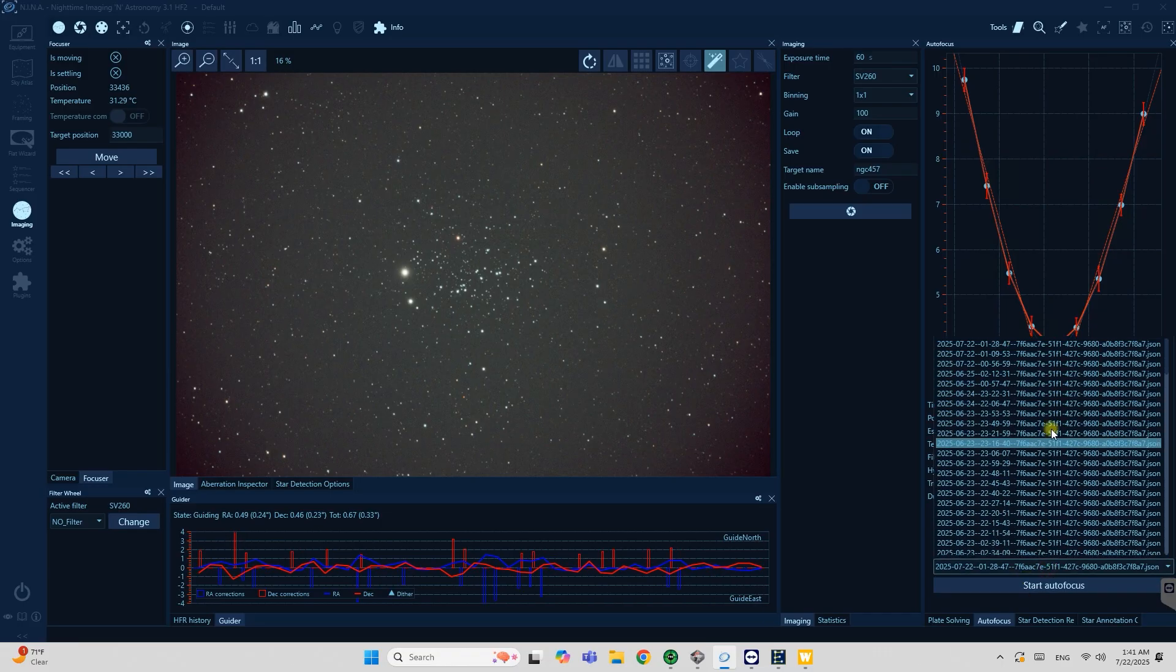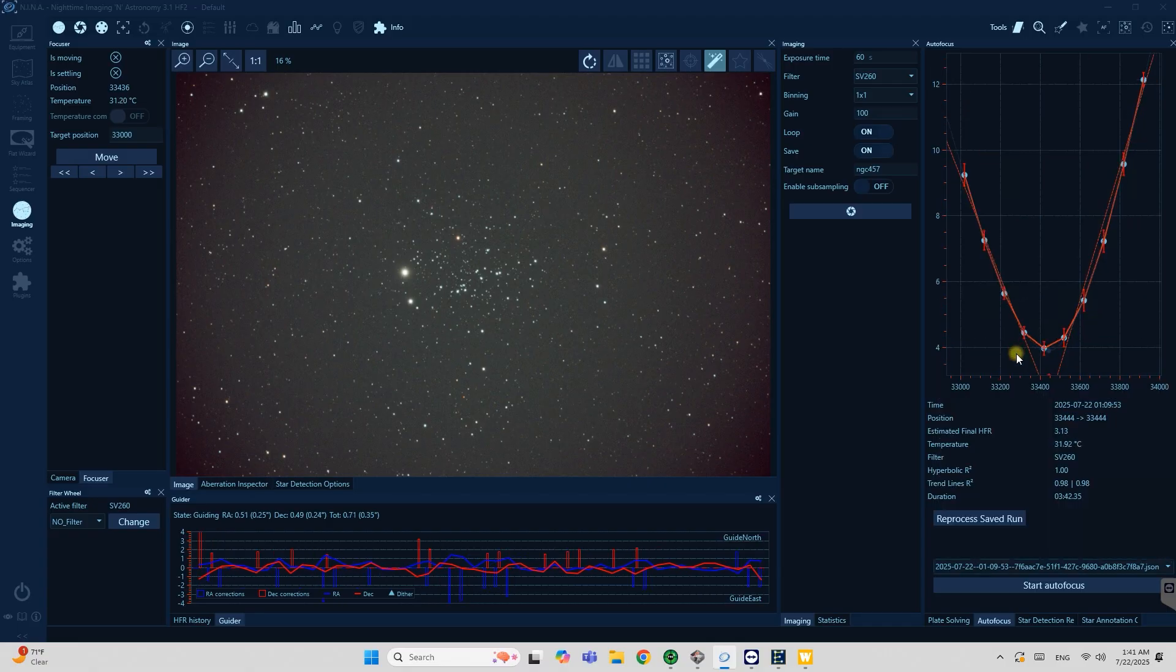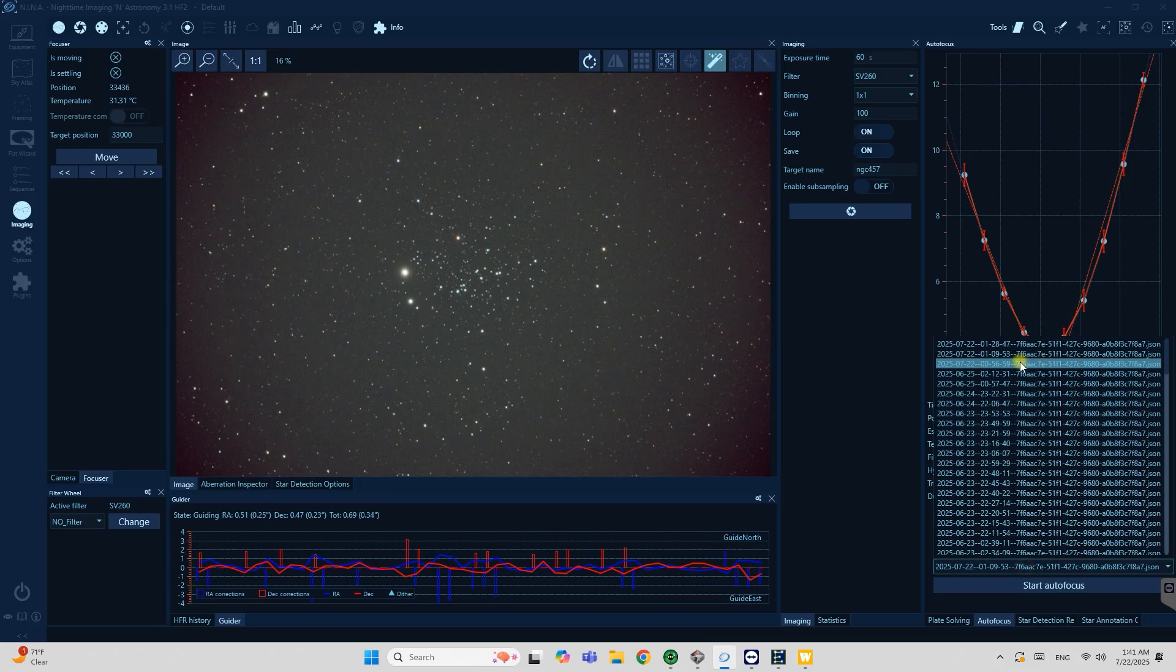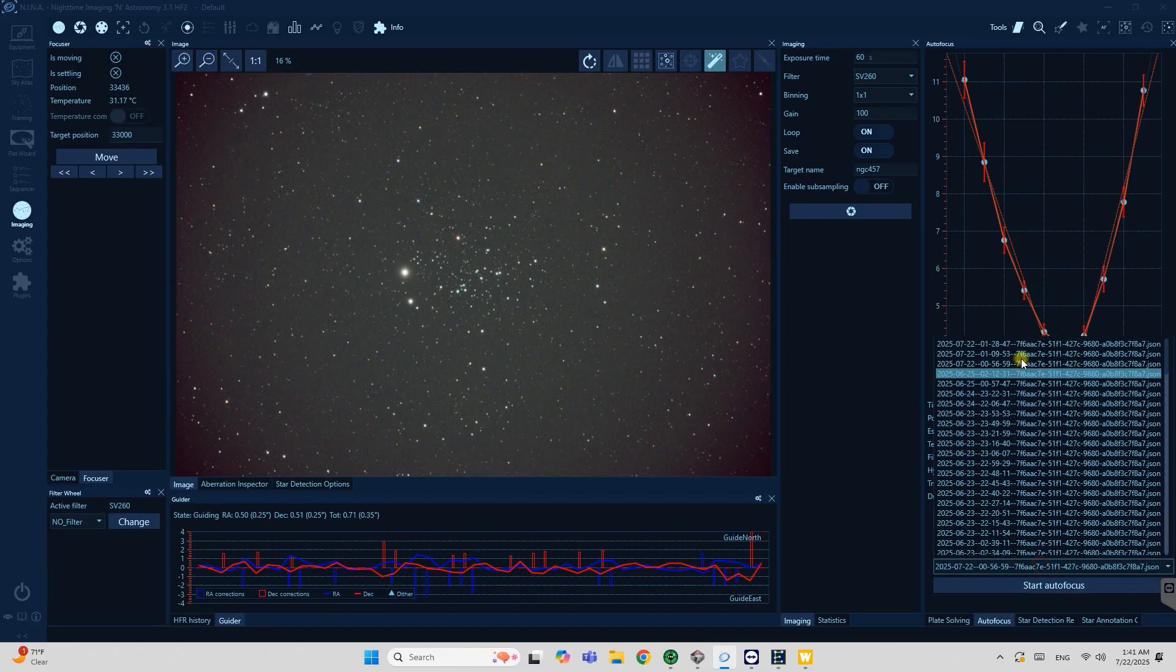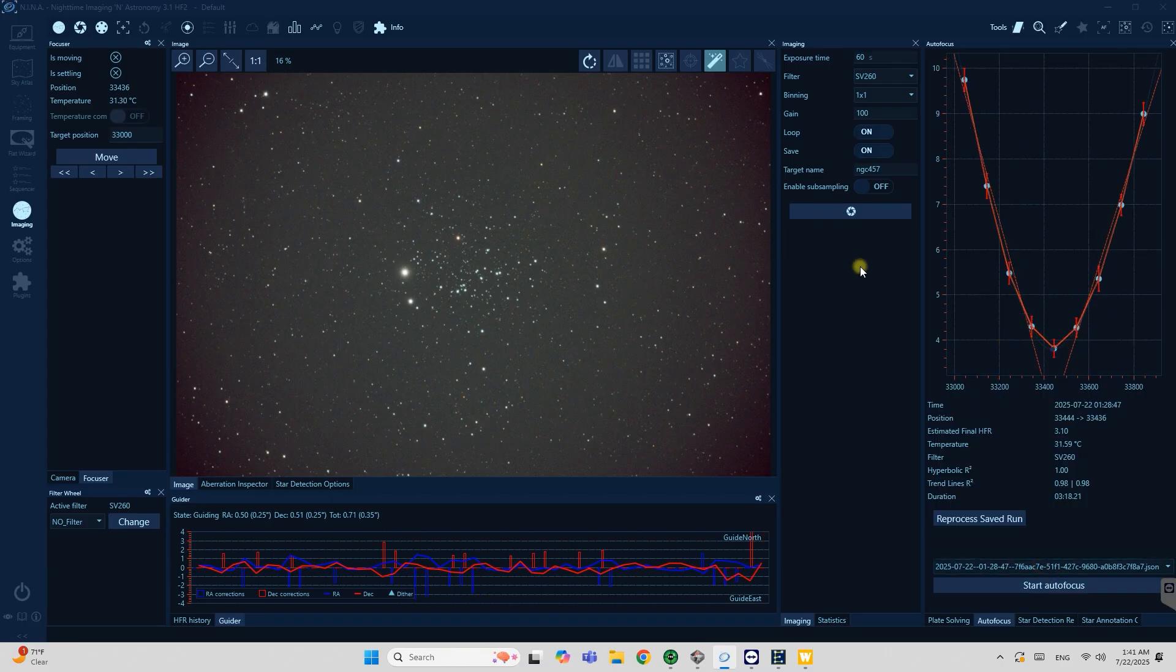This is how the focusing curve looks like. The autofocusing routine runs smoothly and I've done a few of them already. This autofocus I did at 128, this is a previous one. As you can see the parabola looks perfect. Here is one before. So yeah everything looks perfect and I'm kind of happy with the results I'm getting on the telescope.